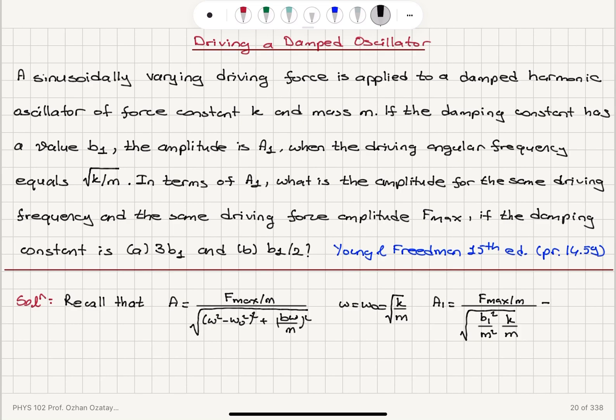So we can see that the amplitude varies as 1 over b₁. So the answer to part a of the question would be if b₁ is increased to 3b₁, the amplitude would be, because it's proportional to 1 over b₁, a₁ divided by 3.